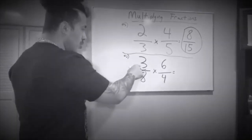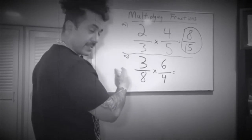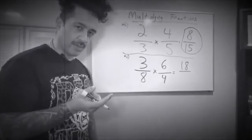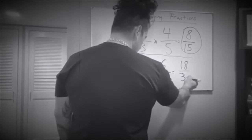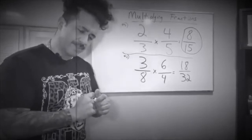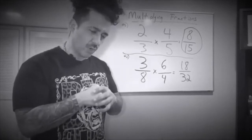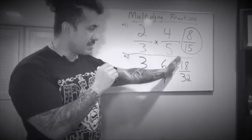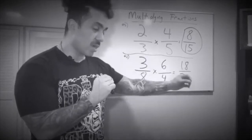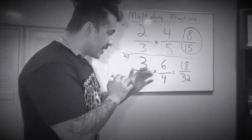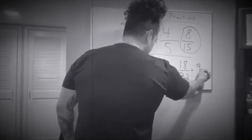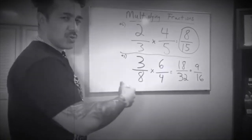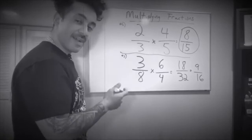Not done — another example. Numerator times numerator, top times top: 3 times 6 is 18. And then denominator times denominator: 8 times 4 — can't make a mistake again — it's 32. So we have 18 over 32. But I look at that fraction and think: is there any way to simplify? Since 18 and 32 are both even numbers, I can divide both by 2. 18 divided by 2 is 9, and 32 divided by 2 is 16. The 9 and the 16 don't share any more common factors, so the final answer is 9 over 16.